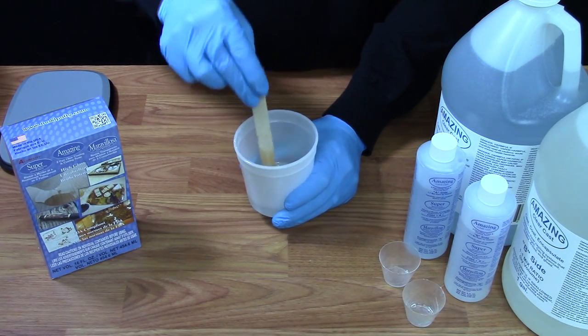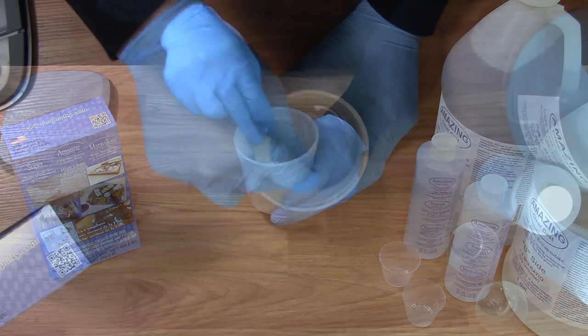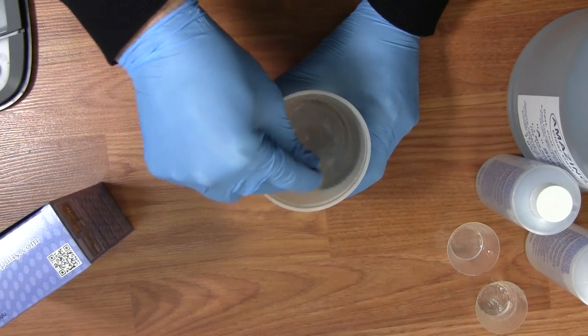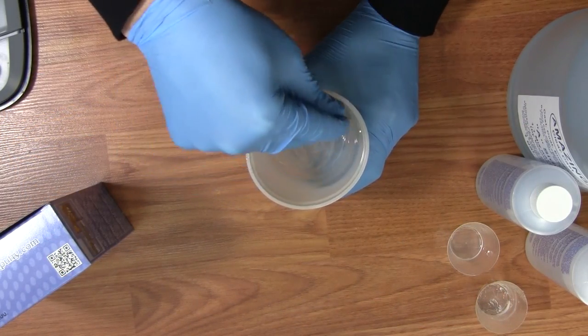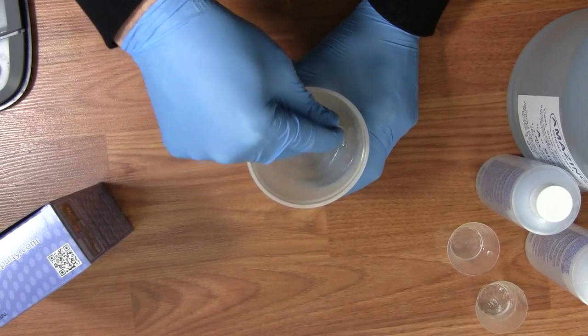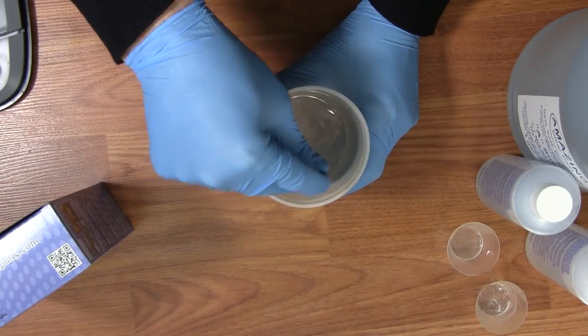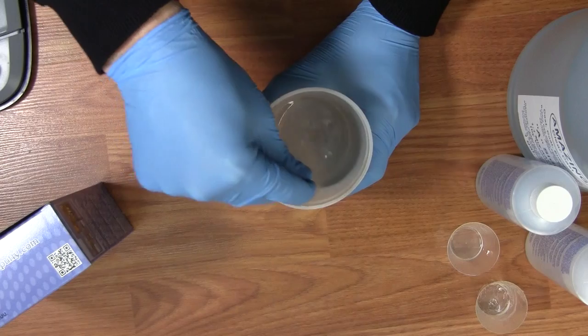Once you have each side combined into your mixing cup, you want to slowly mix this product. Amazing ClearCast has 30 minutes of open time, which is the amount of time you have to pour it on your surface or pour it into a mold.